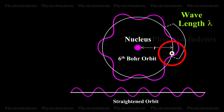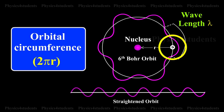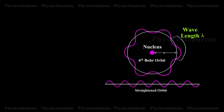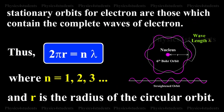It was suggested that stationary orbits are those in which orbital circumference 2πr is an integral multiple of de Broglie's wavelength λ. That is, stationary orbits for an electron are those which contain the complete waves of electron.